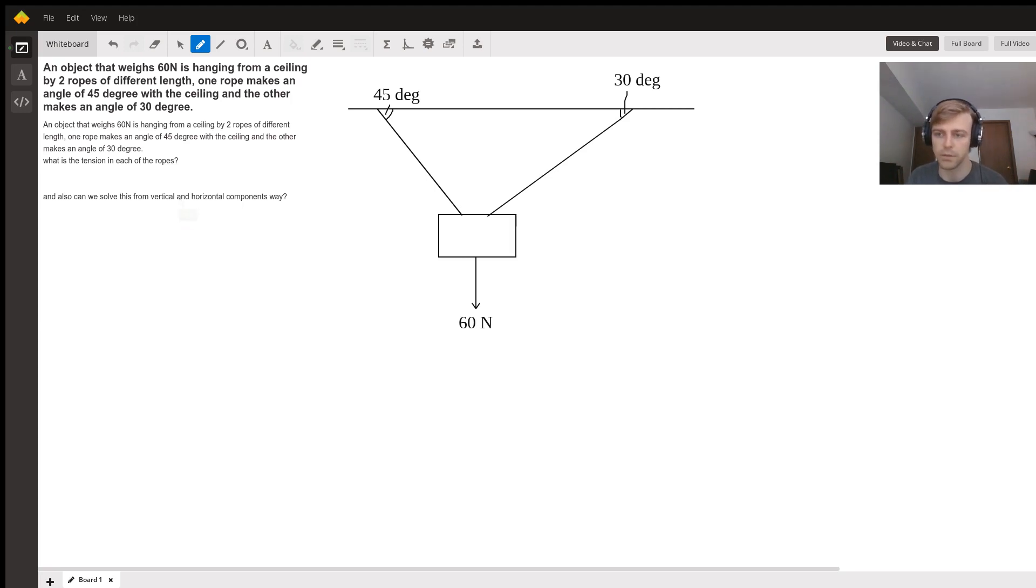We're going to look at it from the perspective of what forces are acting on the block itself, on the object, and then figure out what those forces have to be. So first we need to have our force vectors laid out here. So you have tension going this way, tension going this way, and then the force of gravity going downward.